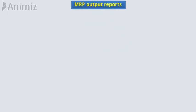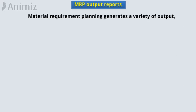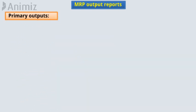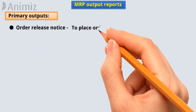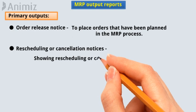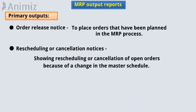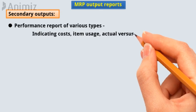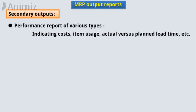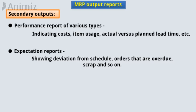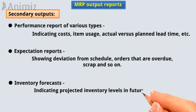MRP output reports: Material requirement planning generates a variety of outputs used in planning and management of plant operations. Primary outputs include: order release notices to place orders planned in the MRP process; rescheduling or cancellation notices showing changes due to the master schedule; and reports on inventory status. Secondary outputs include: performance reports indicating costs, item usage, actual versus planned lead time; exception reports showing deviation from schedule, overdue orders, and scrap; and inventory forecasts indicating projected inventory levels in future periods.